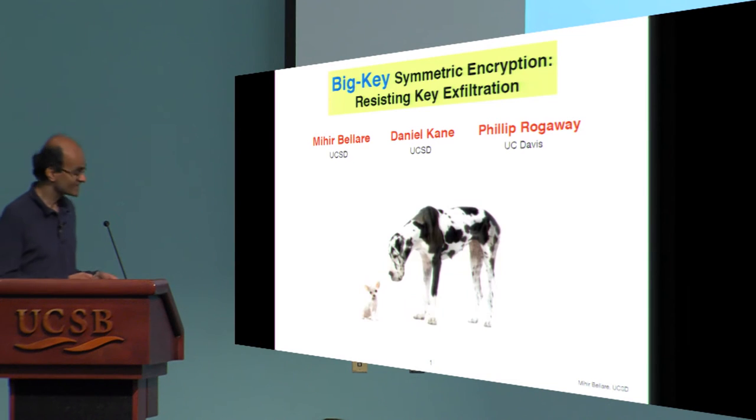Hi, everyone. I'm Mihir. This is joint work with Daniel Kane and Phil Rogowie, and we're interested in using gigantic keys as a means to inhibit their exfiltration.